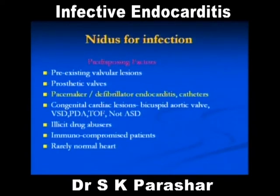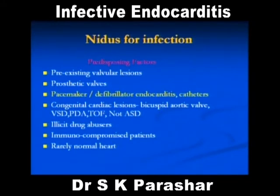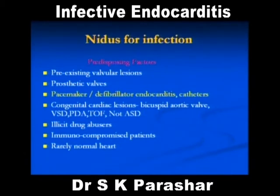Prosthetic valves, pacemakers, defibrillators, congenital cardiac lesions, bicuspid aortic valve — usually not an ASD because it is a low-velocity flow. One of the mechanisms of infective endocarditis is a high-velocity jet which strikes the endocardium to damage it. ASD has low-velocity flow. Drug abusers and immunocompromised patients like AIDS also, but in day-to-day practice, the most common are valvular lesions and some congenital lesions.